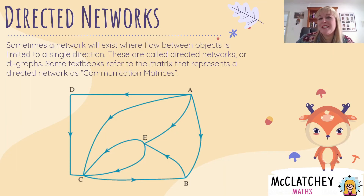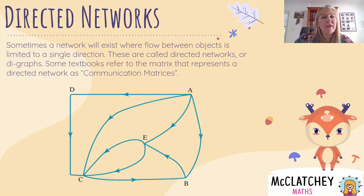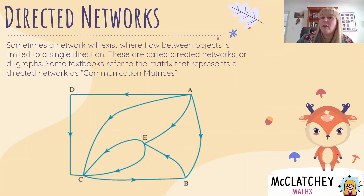Let's talk now about directed networks. Sometimes we have networks where the objects in the matrix will actually flow only in certain directions. So if you look at the picture, these could actually be towns and the flow could be representing one way streets — you can only get from A to C, but you can't get back to A unless you go whole different places. And sometimes we do find that sort of situation in real life — there's directed flow. Some particular textbooks call this a communication matrix. But really what we're talking about here are directed networks and the graph is called a digraph because it's a directed graph.